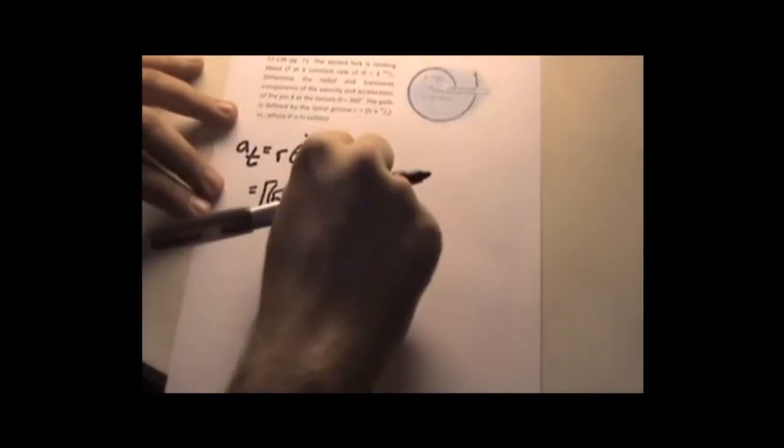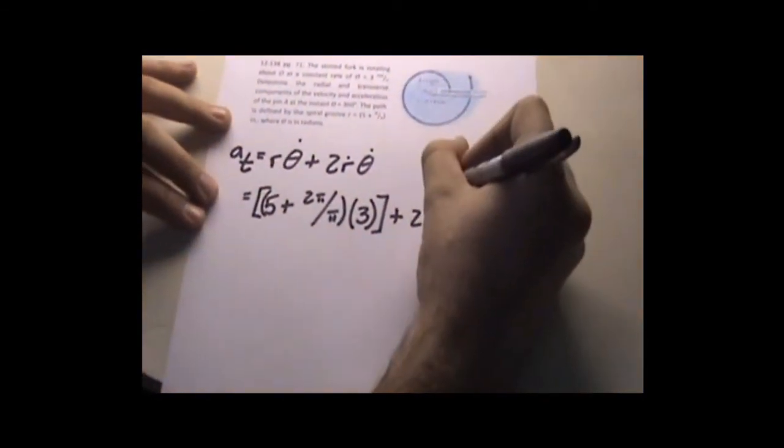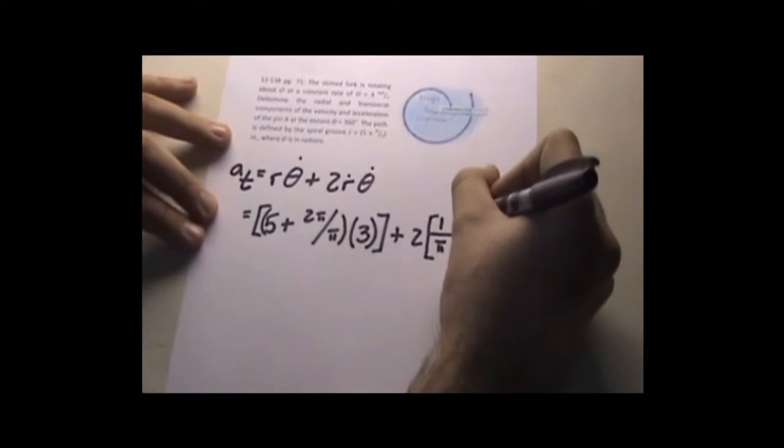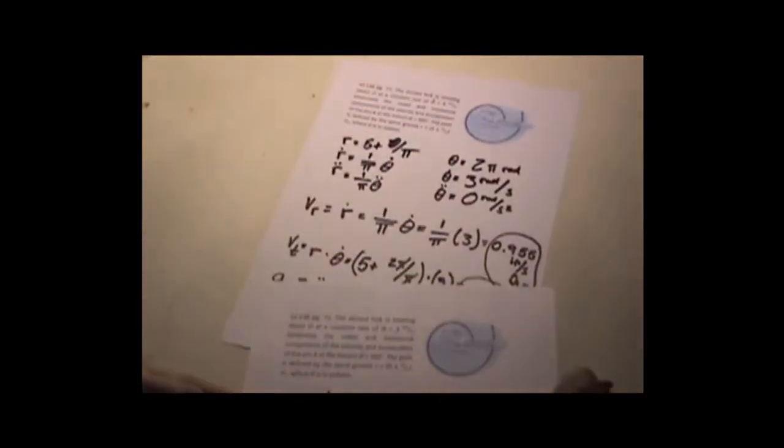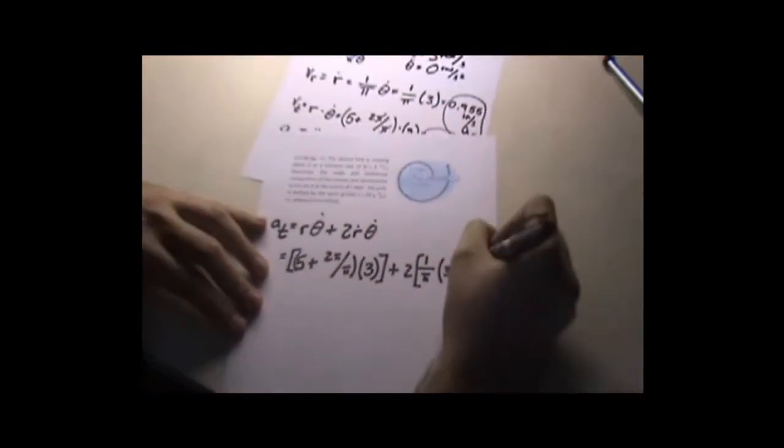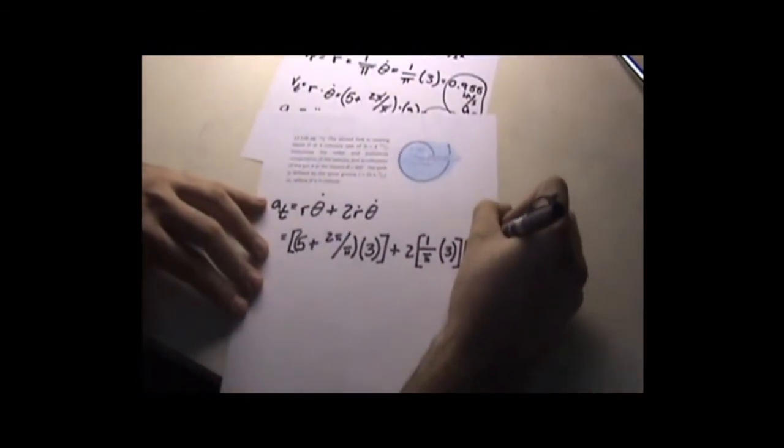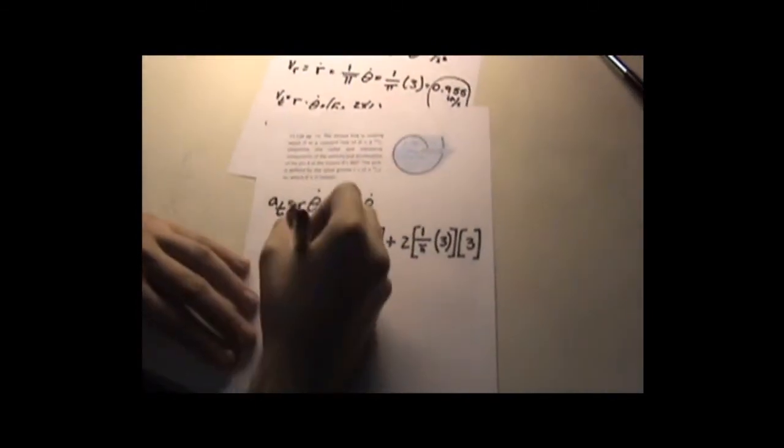Plus 2 times ṙ, which is 1 over π, times θ̇, θ̇ is 3. Times θ̇, which is 3. Once again. Multiply this out. You end up getting, pies cancel out.